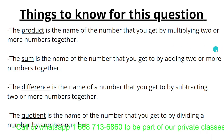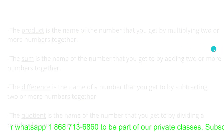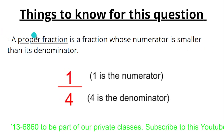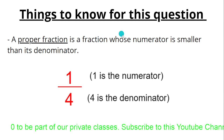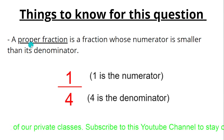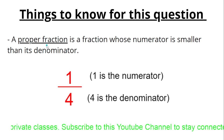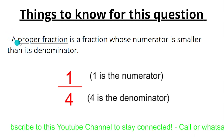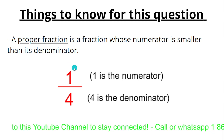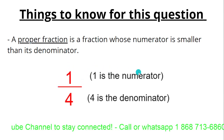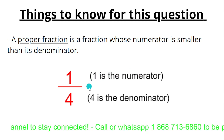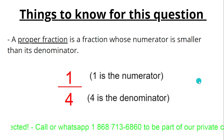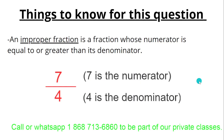You also need to know what a proper fraction is. A proper fraction is a fraction whose numerator is smaller than its denominator. For example, one quarter — one is the numerator above and four is the denominator. That's a proper fraction.